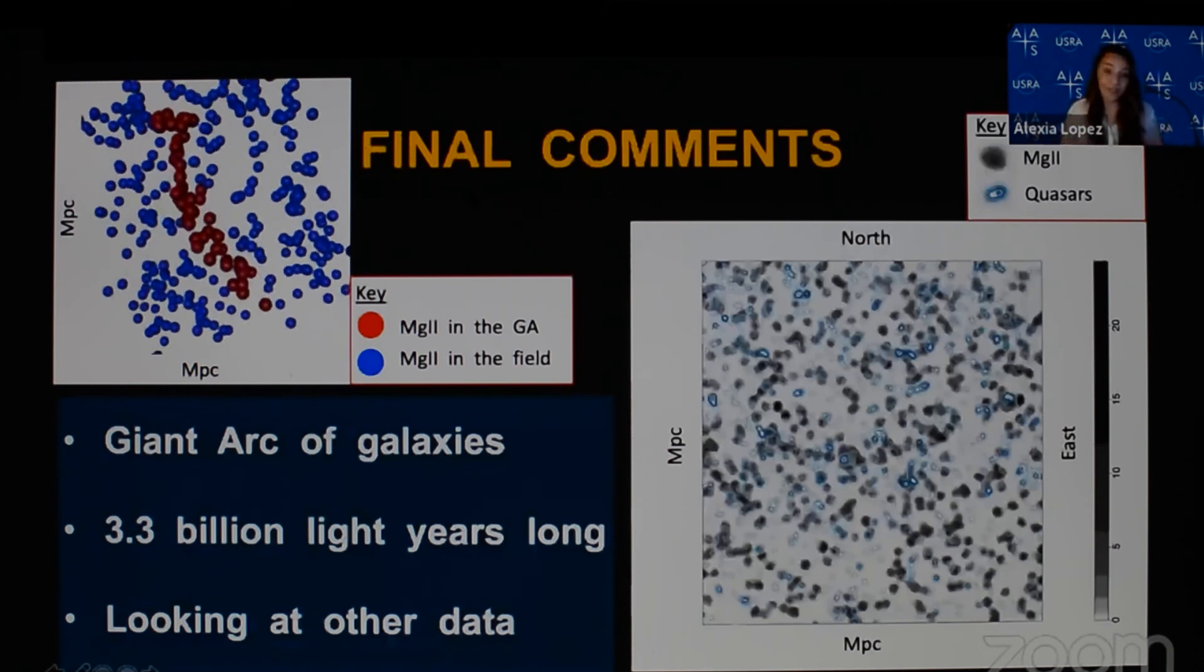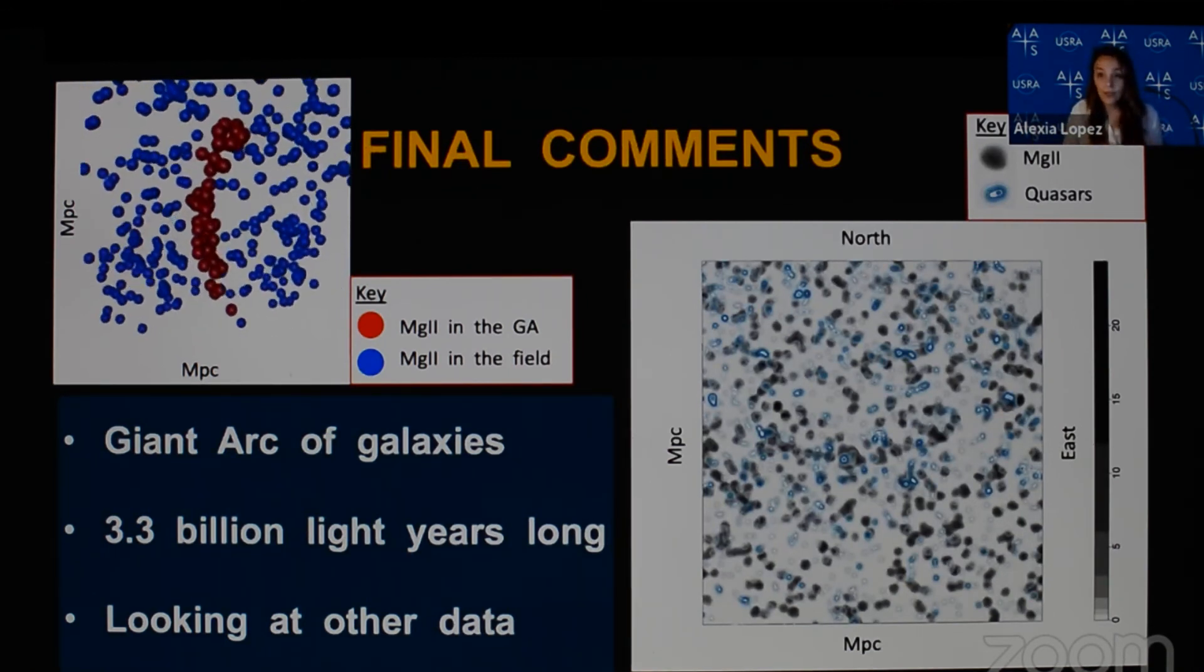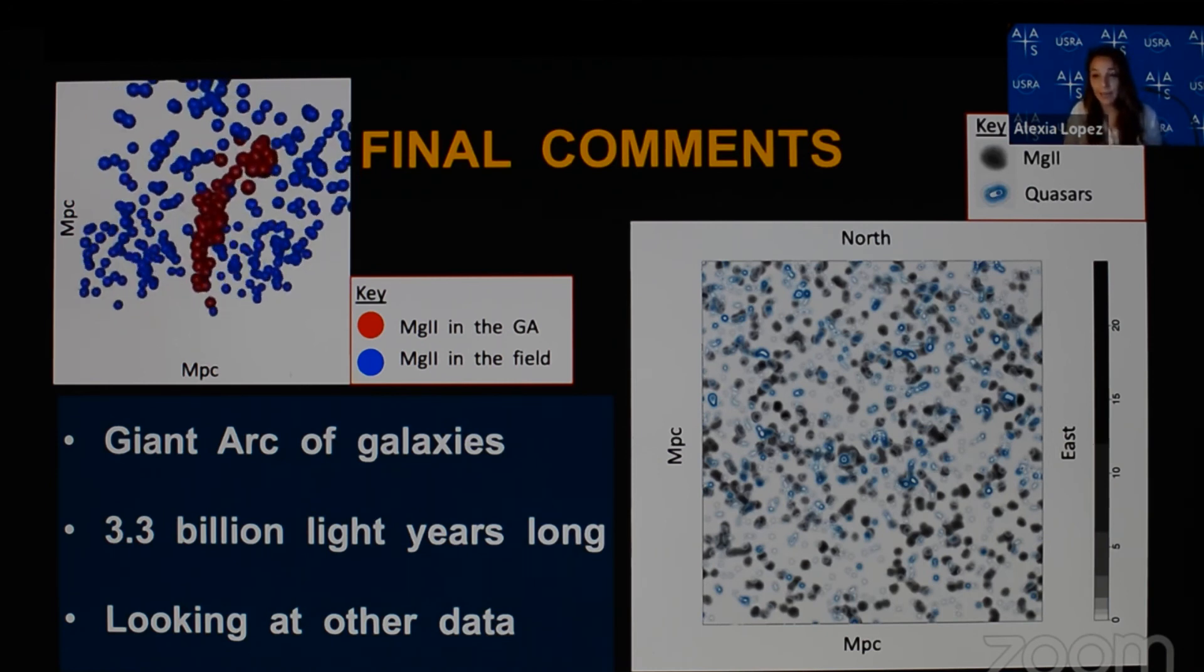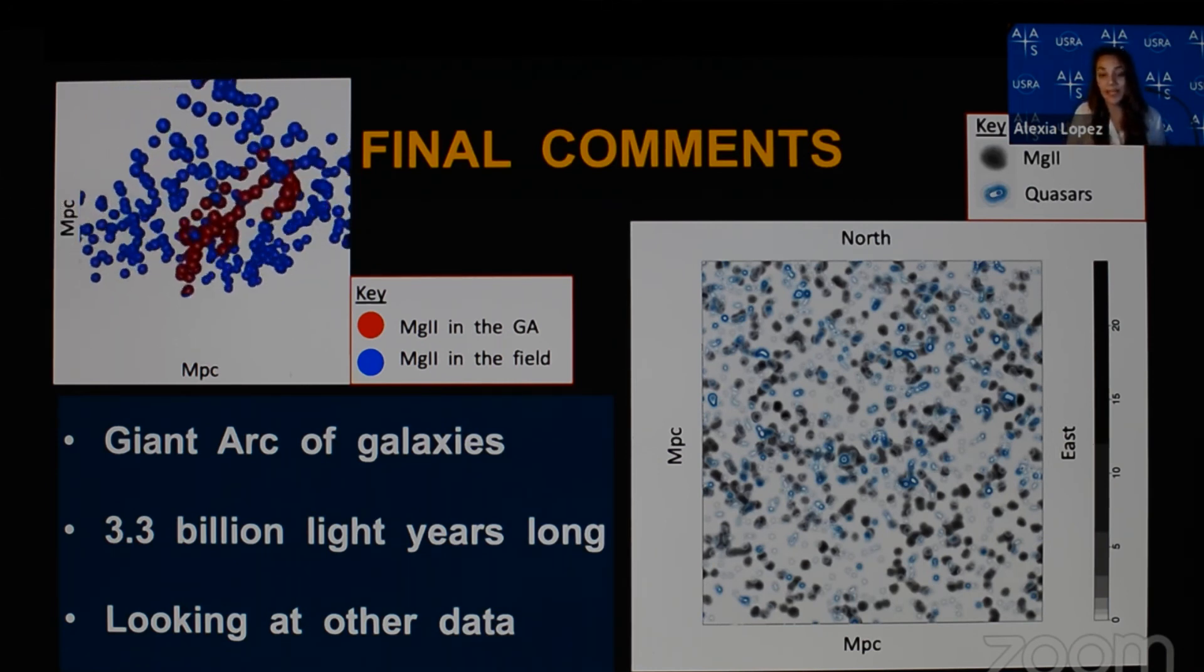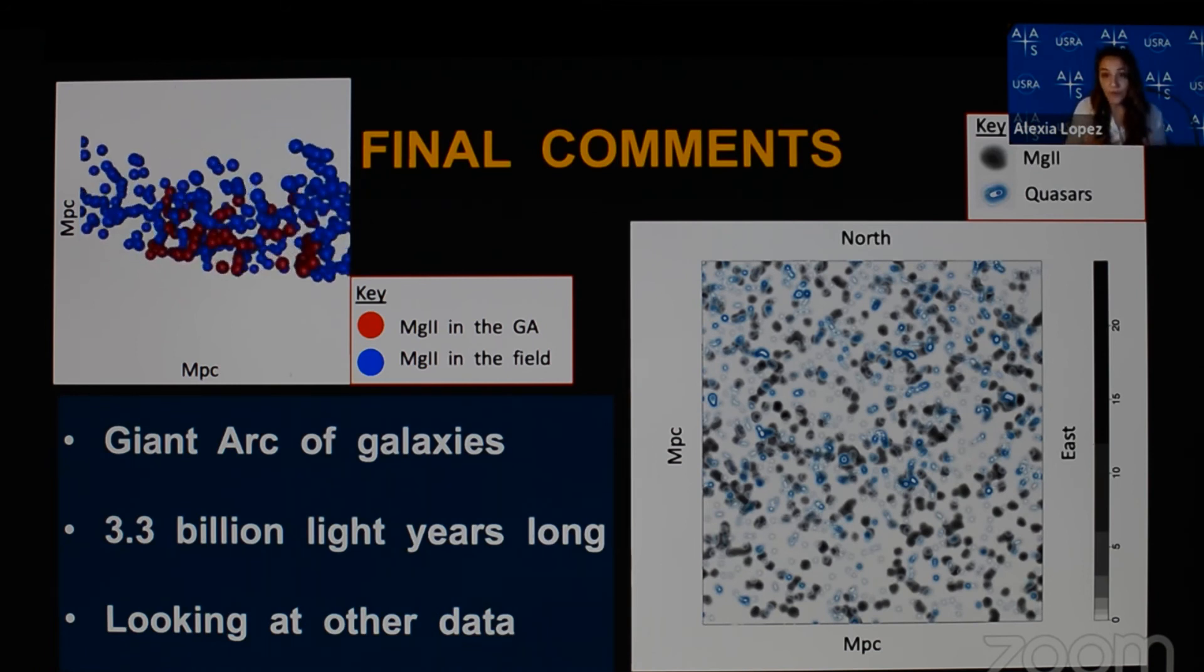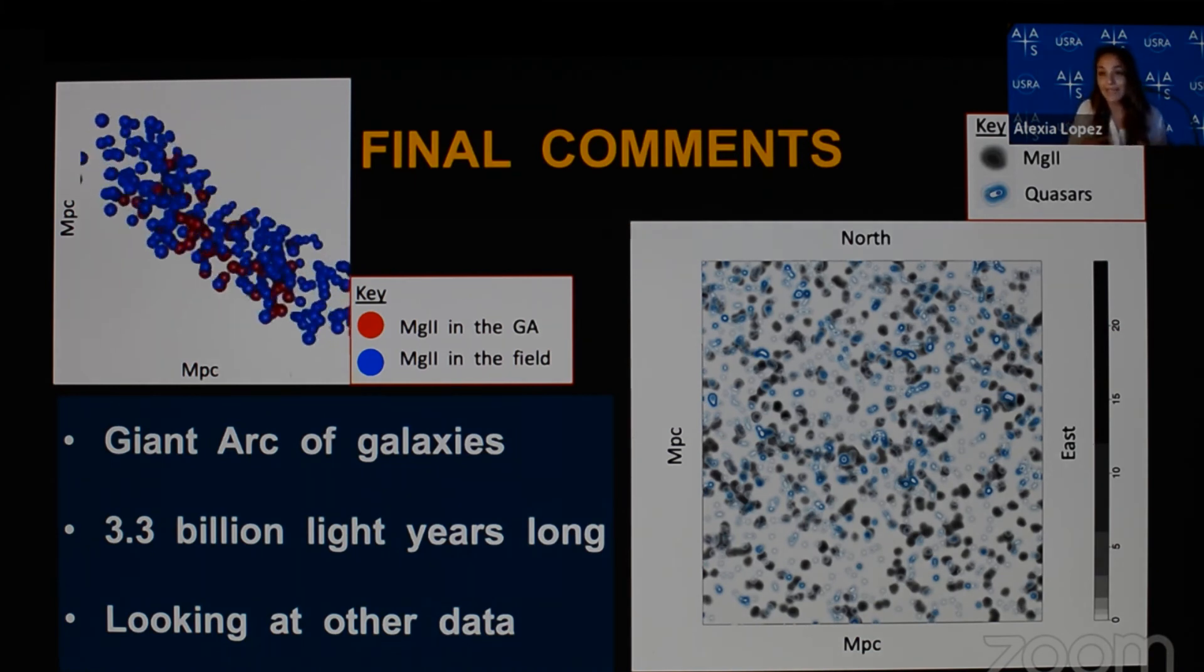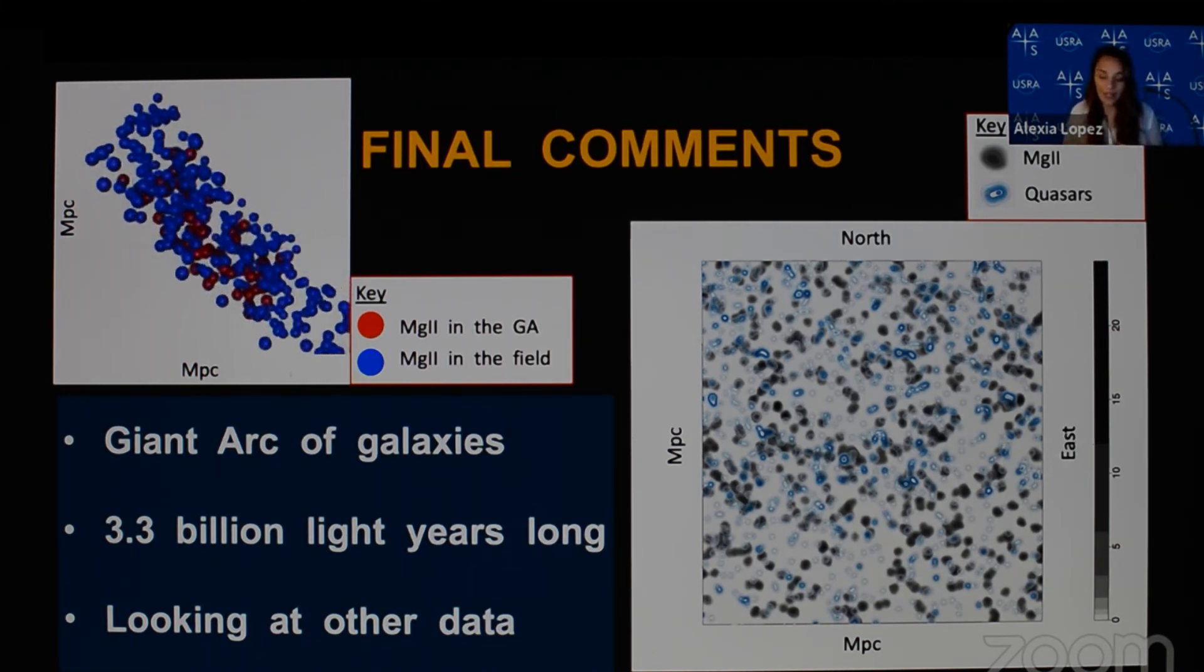We plan to take further steps in assessing the giant arc. For instance, we've already taken a quick look at the quasars in the same neighbourhood as the magnesium-2 absorbers, and this shows a tentative association. Going forward, we plan to look at other data in the same field as the magnesium-2 absorbers, as this can help indicate the environment of the giant arc.